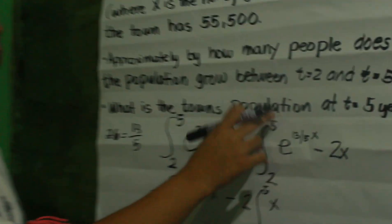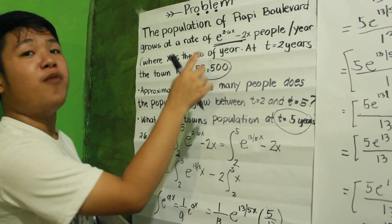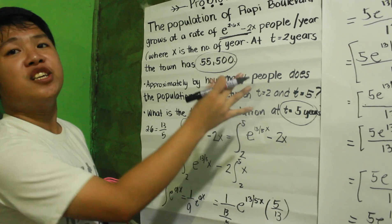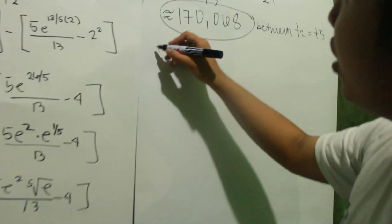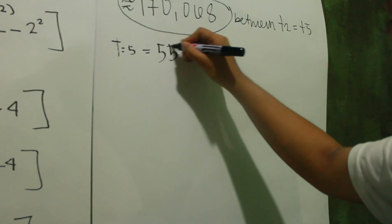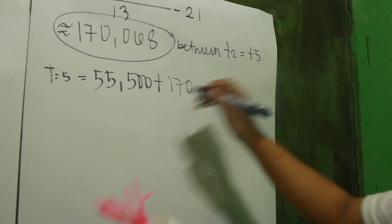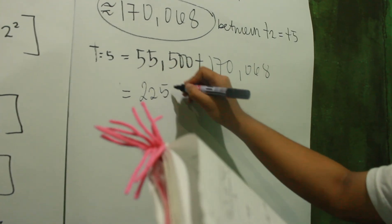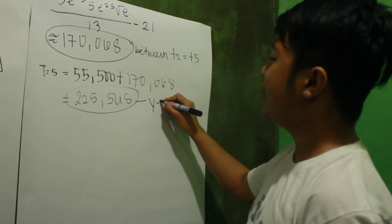Now we can answer question number 2: what is the town's population at year 5? To answer this, we add the total population in year 2 to our answer from question number 1. So the total population in year 5 would be 55,500 plus 170,068, which gives us 225,568. This is the total population at year 5.